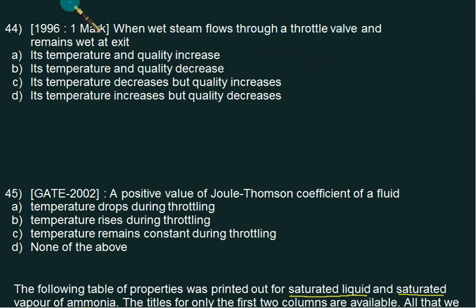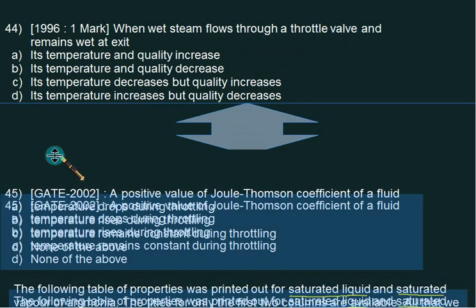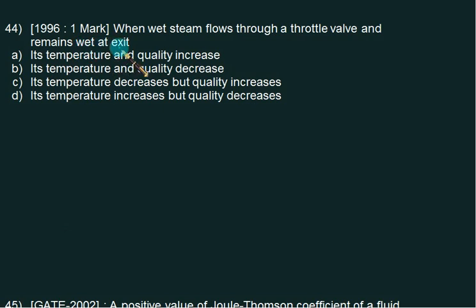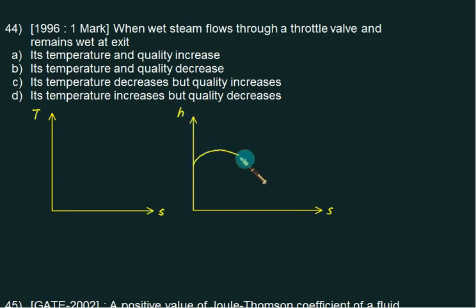When wet steam flows through a throttle valve and remains wet at exit, what will happen to the temperature and quality? This time we'll explain with the help of two diagrams: the T-S diagram and the H-S diagram. In the case of vapor, your dome shape will be like this, and the constant pressure lines are represented in this fashion.